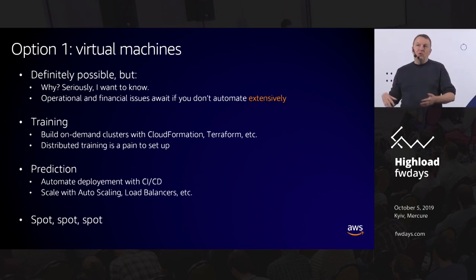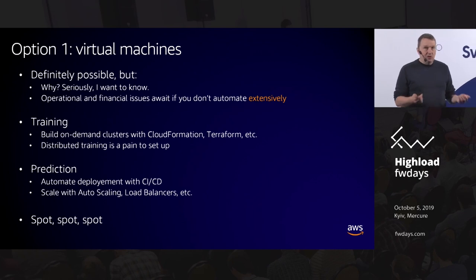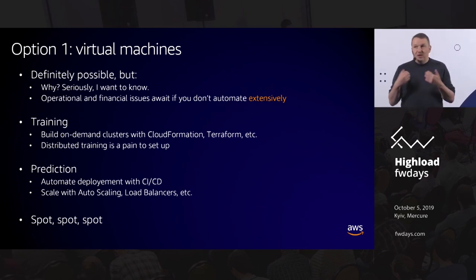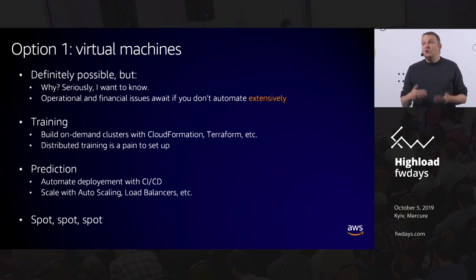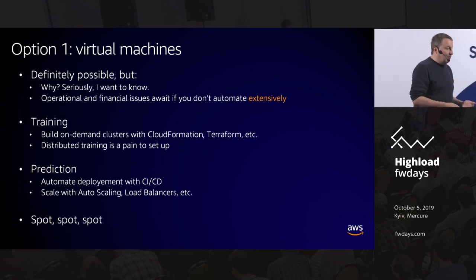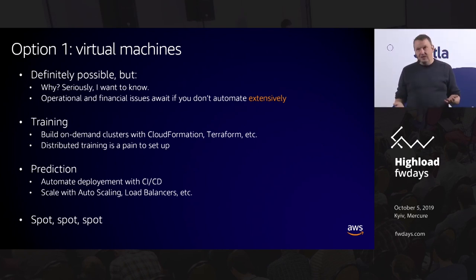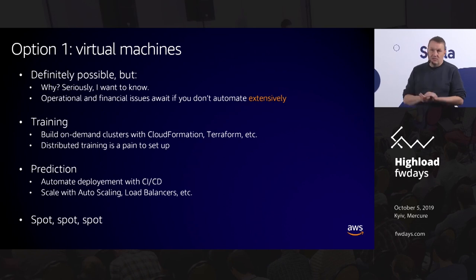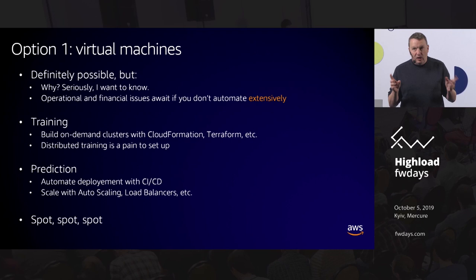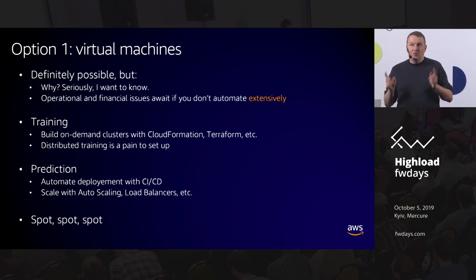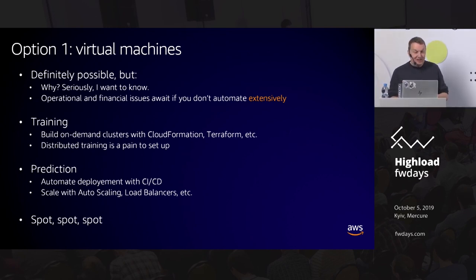Setting up distributed training on clusters is not going to be fun — try it once and you'll agree. For prediction it's the same: automate everything, use Auto Scaling, use load balancers, use all the EC2 features. And whatever you do, please use Spot instances. If you use EC2 today and the word 'Spot' doesn't ring a bell, you're probably spending 60 to 80 percent too much on EC2. Go back to the office, look for EC2 Spot, and thank me.